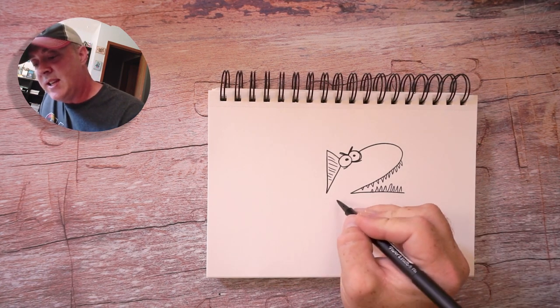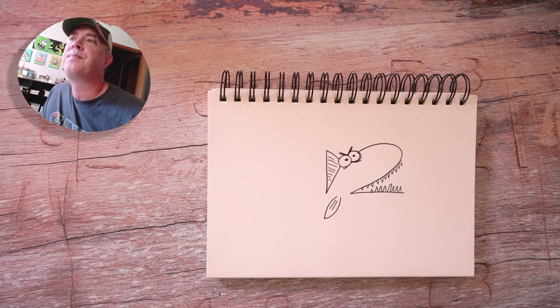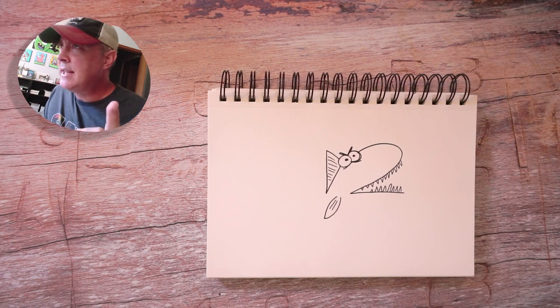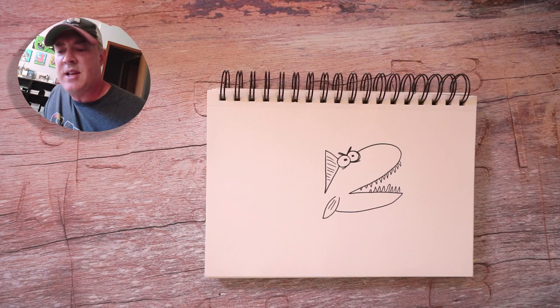Let's draw a fin down here. We're just going to draw a leaf shape with a couple little lines in it. And then let's draw a line from the end of the two over to the leaf shape.